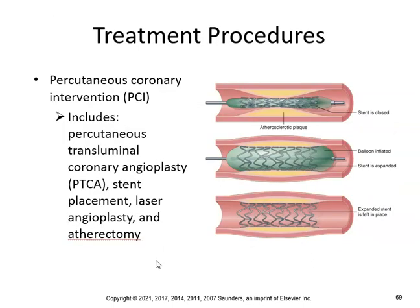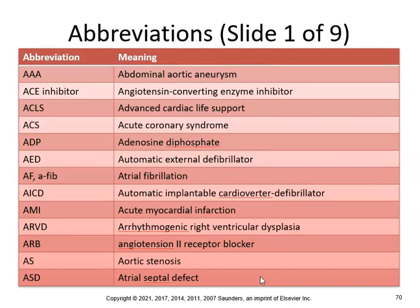Percutaneous coronary intervention (PCI) includes percutaneous transluminal coronary angioplasty (PTCA), stent replacement, laser angioplasty, and atherectomy. For example, if there is atherosclerotic plaque, a small stent with a balloon is inserted, the balloon is inflated to move the plaque out of the way, the stent is kept in place, and then the balloon is removed — very common.